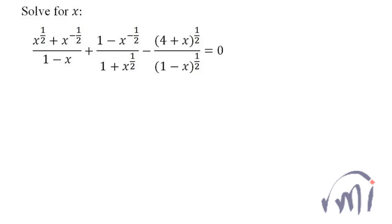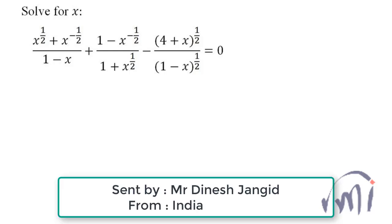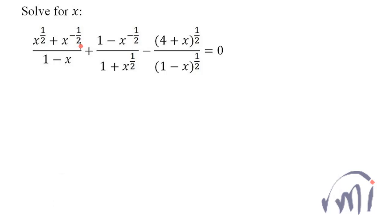Hi, so here we have a problem which was sent by Mr. Dinesh Janked and here we have to find the value of x. This expression is made up of three terms and this term is negative, and since on the right side we have zero, just to make it easier I'm going to shift this term to the right hand side.